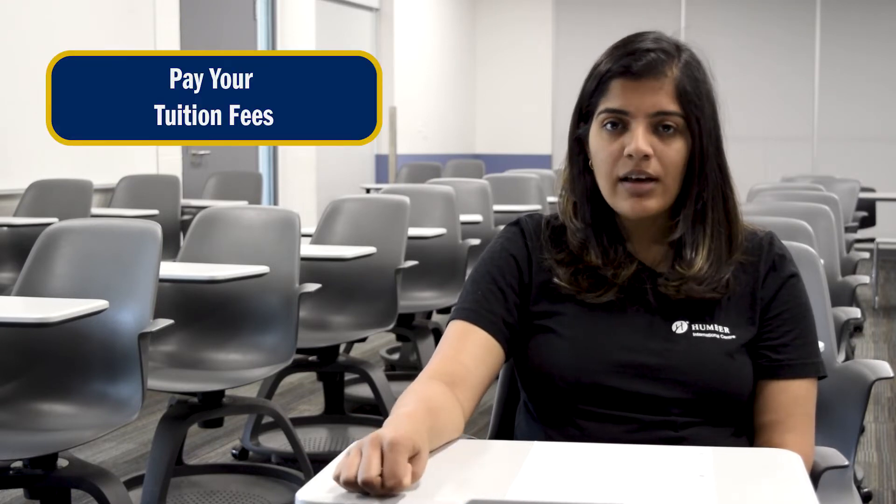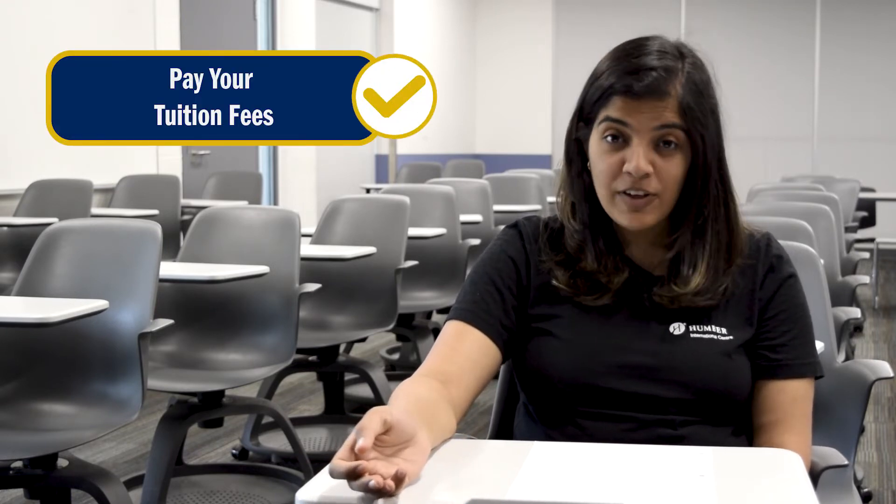The next step that you need to take is to pay your tuition fees. As we say nothing in life comes free and there's always deadlines to everything so make sure you check your deadline for fees payment on your offer letter. Some payments take longer than others and you should give yourself some window of time to make those payments. For example wire transfer takes up to 10 days to come into Humber's account so I would not pay on the day of the deadline. If you haven't checked out our video for how to pay you can click on the link here and find out.